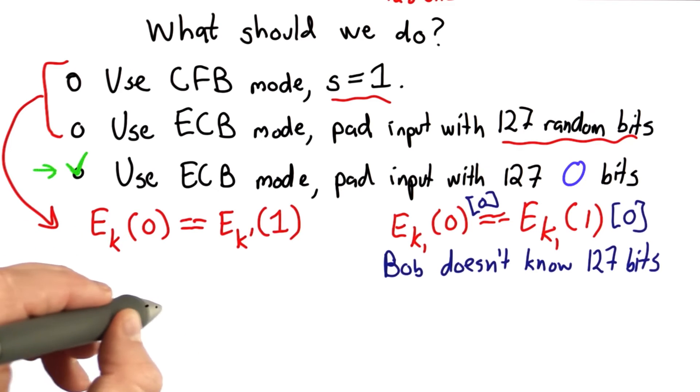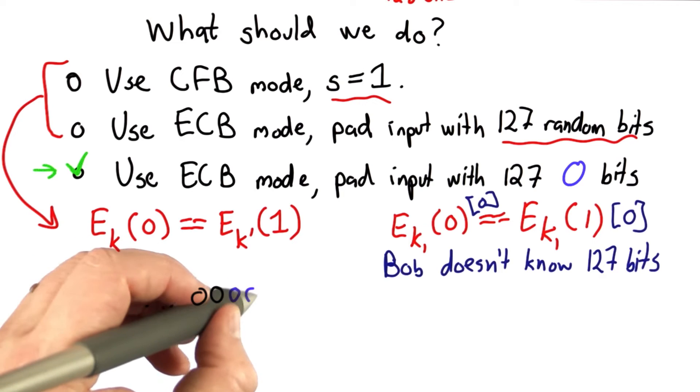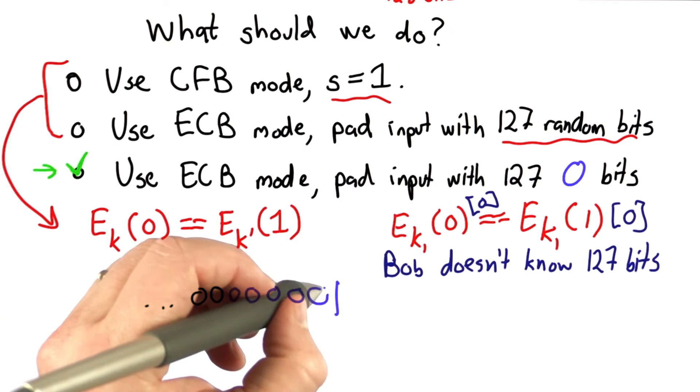this doesn't quite work because if the message ends with zero bits and we start the padding with zero bits, we don't know where the actual end was.